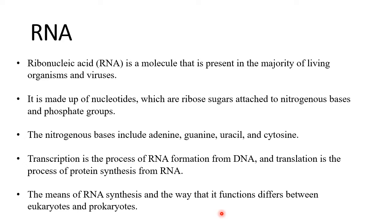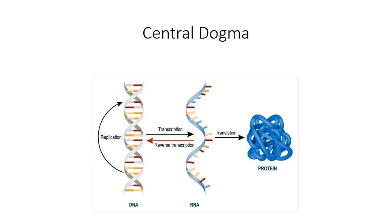Prokaryotes lack a nucleus, so replication, transcription, and translation can all happen simultaneously in the cytoplasm. But in eukaryotes, replication and transcription occur in the nucleus, and then the processed mature mRNA goes out of the nucleus, and translation occurs in the cytoplasm. So this is about the central dogma — just a quick revision if you were unclear on it.